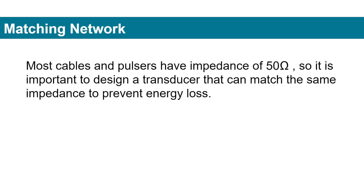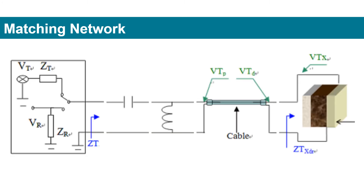Since most cables and pulsers have an impedance of 50 Ohm, it is important to design a transducer that can match the same impedance to prevent energy loss. For a small area transducer, an active material with a high dielectric constant is preferred. When a transducer's electrical properties differ from that of the circuit and cable, a matching network is needed to prevent reflections at each boundary. Most matching networks consist of inductors and capacitors, either in series or shunt connection.